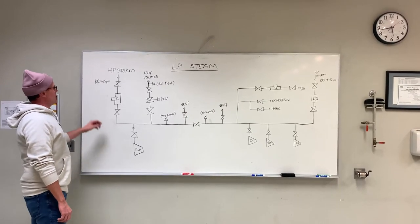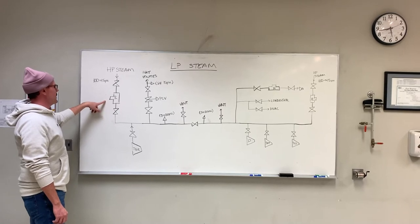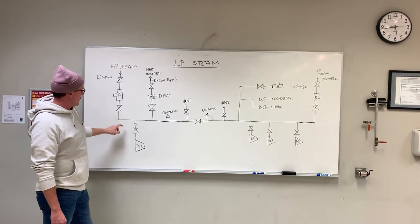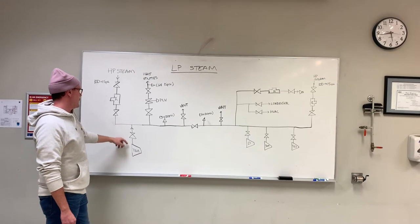So the LP scheme comes in off the header from the HP scheme. It drops down from 100 psi to 15 psi. It also comes in off the TG2, back to the header here.